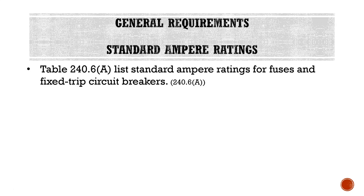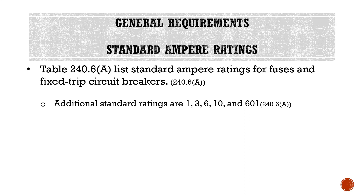Moving on to standard ampere ratings: Table 240.6A lists standard ampere ratings for fuses and fixed-trip circuit breakers. This table is one we'll be going back to repeatedly, similar to Table 310.15 B16. Table 240.6A essentially tells us what size overcurrent protective device we're going to be using for a circuit. In addition to the ratings listed in Table 240.6A, there are additional standard ratings of 1, 3, 6, 10, and 601 for fuses only — these sizes do not apply to circuit breakers.